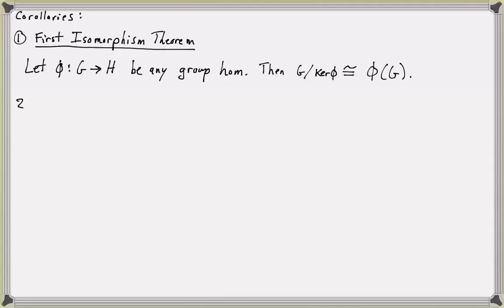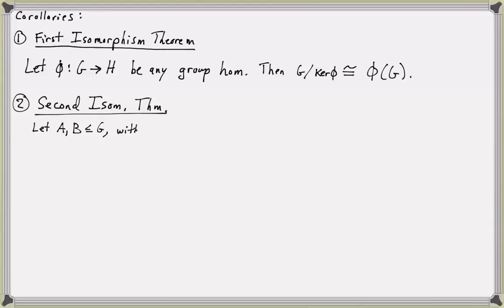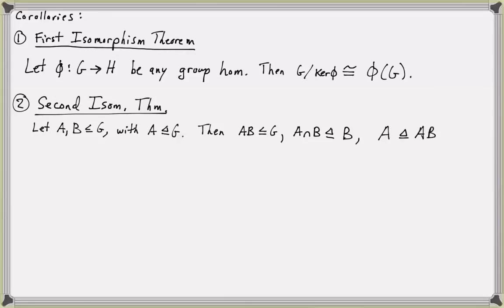Now let's state the second isomorphism theorem. It starts with A and B subgroups of group G, with A actually a normal subgroup of G. Then we will show that the set AB is a subgroup of G, A intersect B is a normal subgroup of B, A is a normal subgroup of AB, and the isomorphic statement is: B mod (A intersect B) is isomorphic to AB mod A.